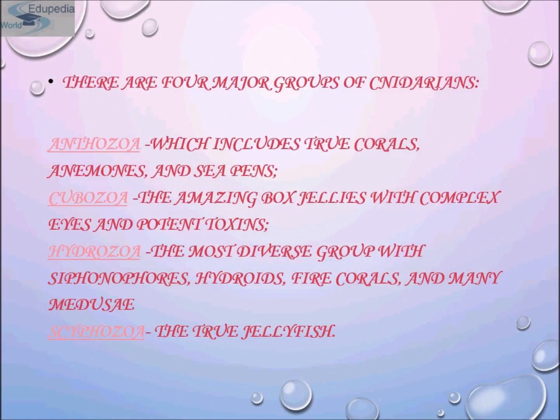There are four major groups of cnidarians. First is Anthozoa, which includes true corals, anemones, and sea pens. The second group is Cubozoa — the amazing box jellies with complex eyes and potent toxins. Third is Hydrozoa, the most diverse group with siphonophores, hydroids, fire corals, and many medusae. Fourth is Scyphozoa — the true jellyfish.